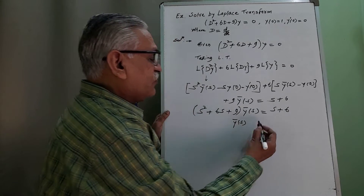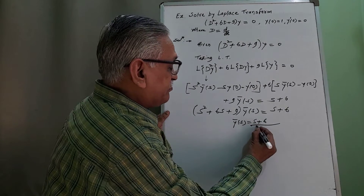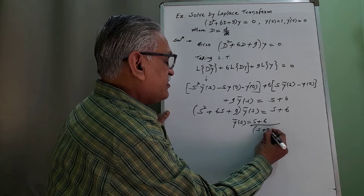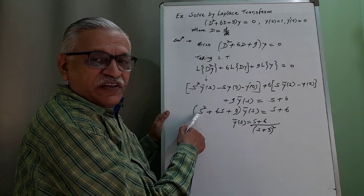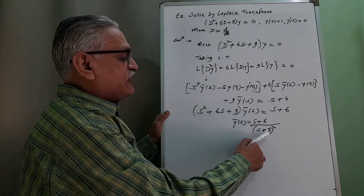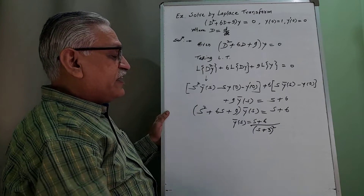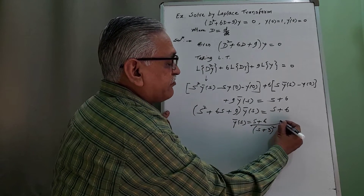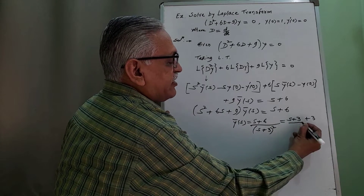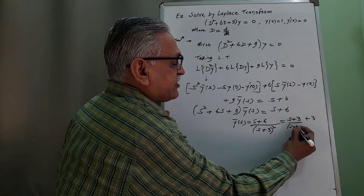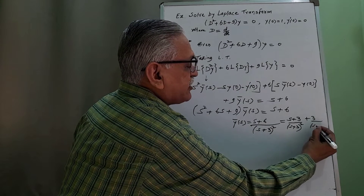Dividing both sides by (s² + 6s + 9), we get ȳ(s) = (s + 6)/(s² + 6s + 9). Note that s² + 6s + 9 is a perfect square: (s + 3)². Rewriting the numerator s + 6 as (s + 3) + 3, we split the fraction: (s + 3)/(s + 3)² plus 3/(s + 3)².